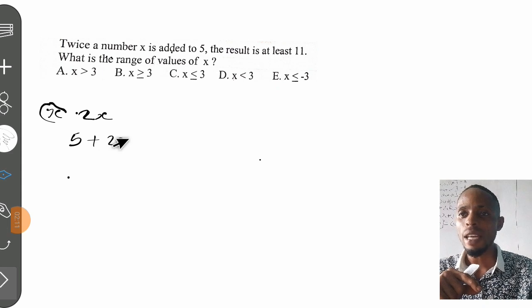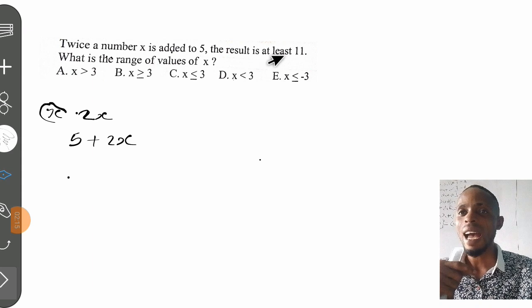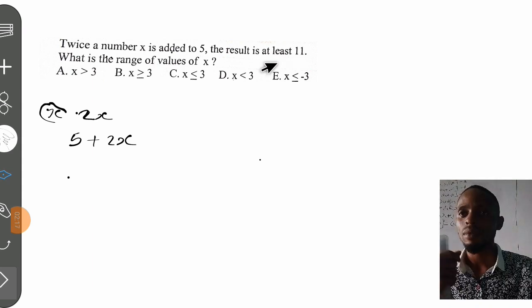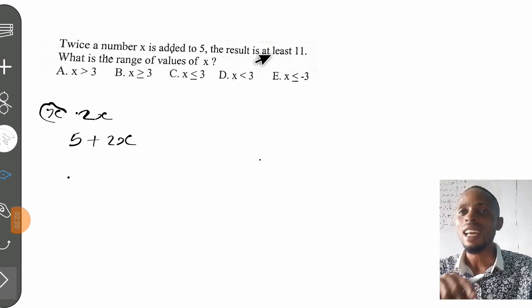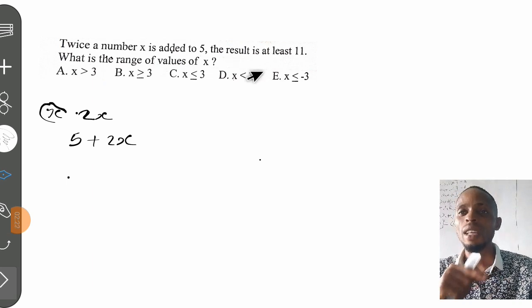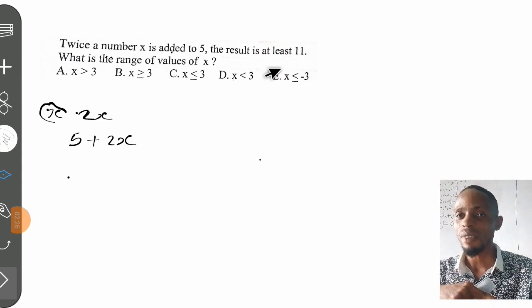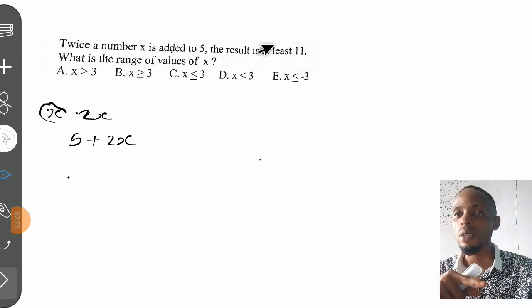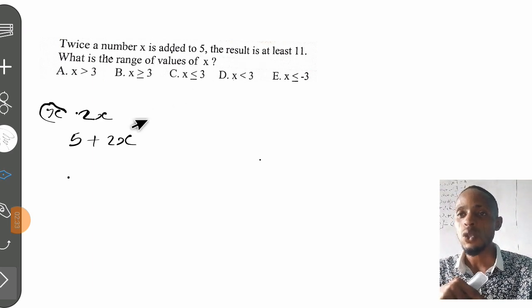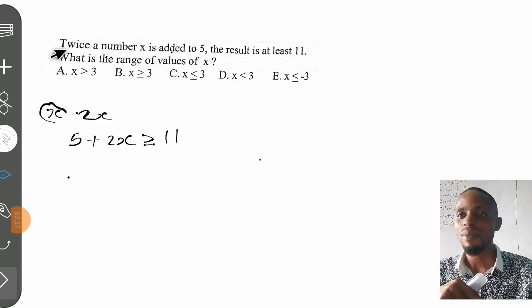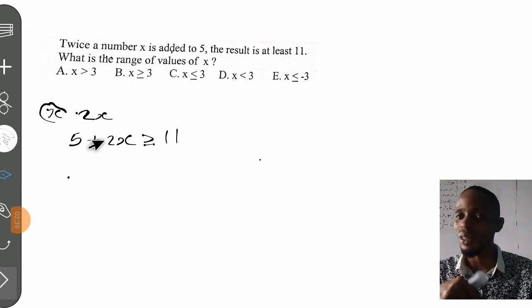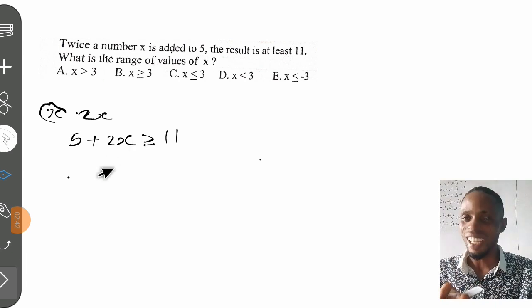The result is at least 11. 'At least' represents greater than or equal to. If it were 'at most,' it would mean less than or equal to. But 'at least' means greater than or equal to. Therefore, we have 2x + 5 ≥ 11. We've interpreted this statement into an inequality.